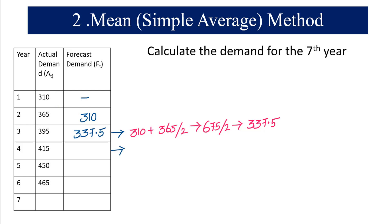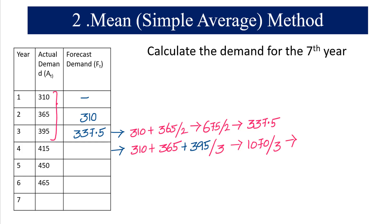Now let's calculate for the fourth year. We take the previous three years' data: 310 plus 365 plus 395 — whenever I bring in new data I'm marking it in blue — divided by 3. This gives us 1070 divided by 3, which equals 356.67. Rounding to the nearest number, the forecasted demand for the fourth year is 357.